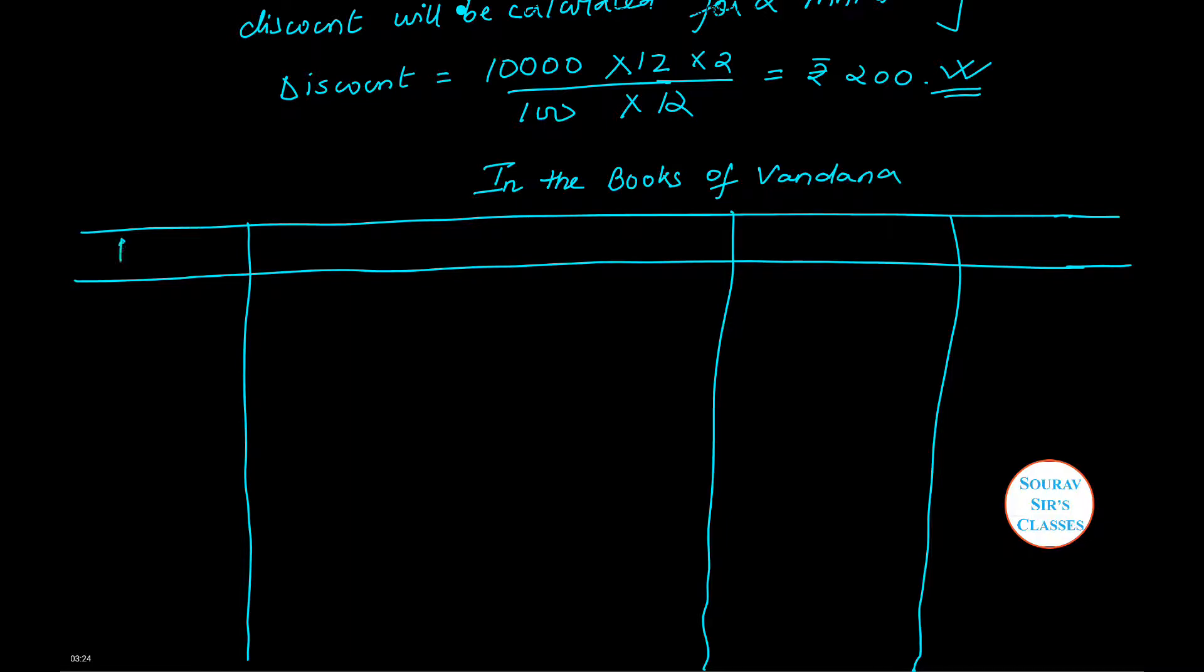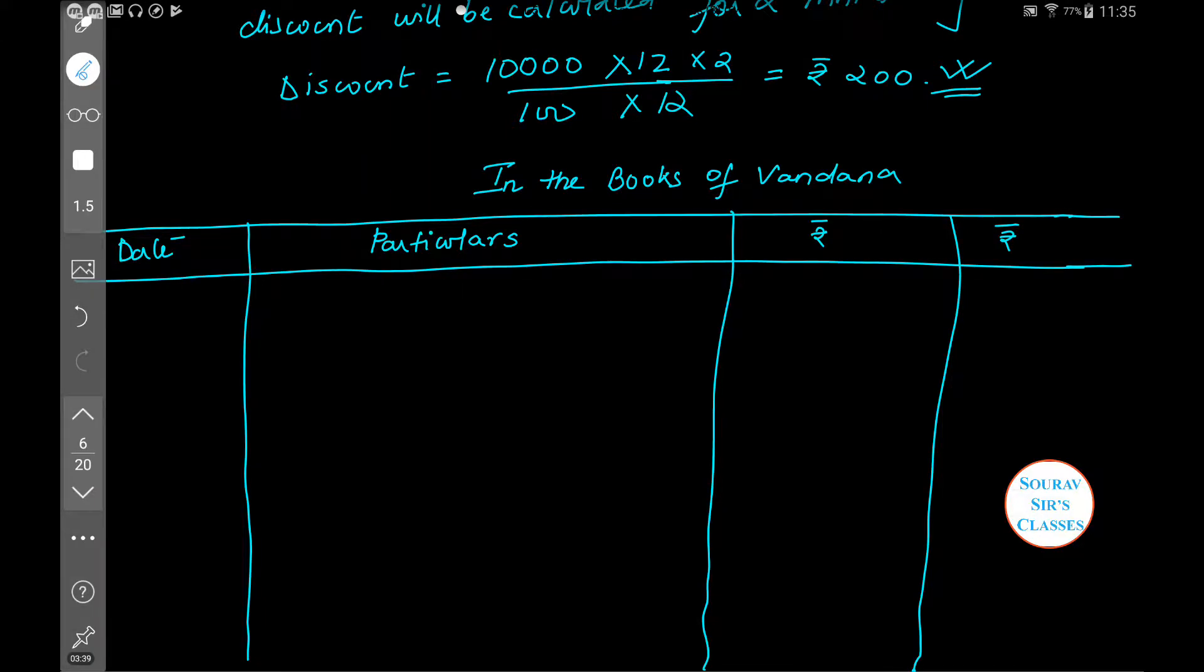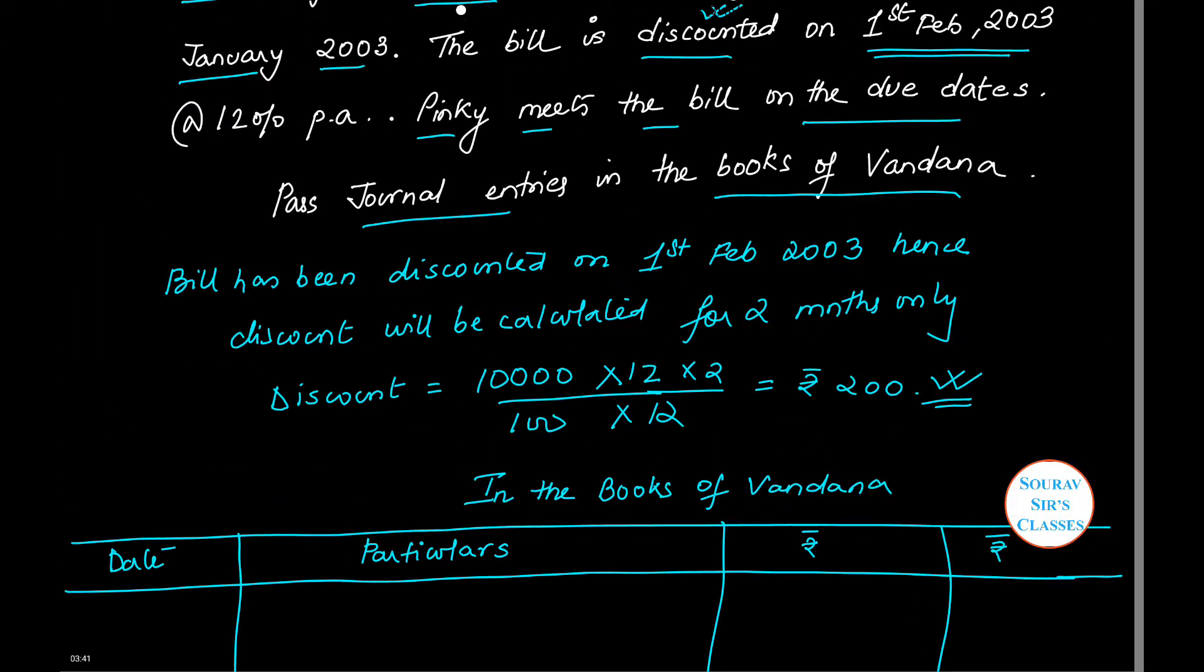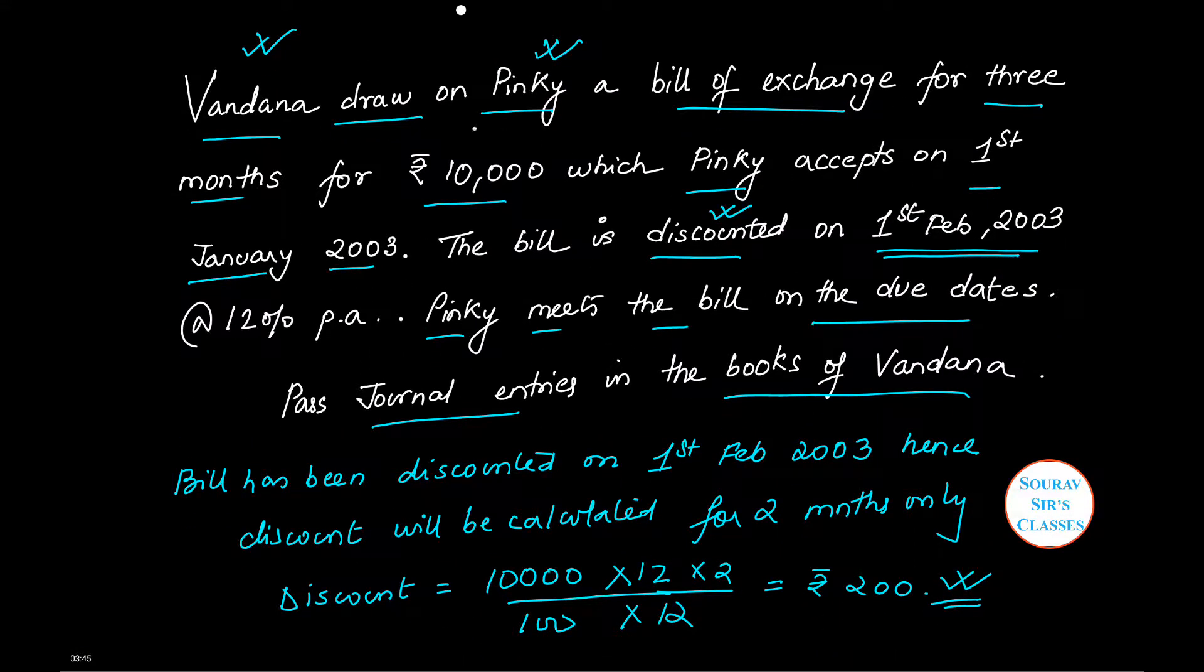It will be something like this: we will have a date column, particulars column, and both will be rupees—one is a debit, one is a credit side. This is in the books of Vandana.